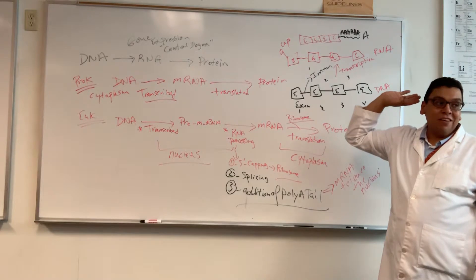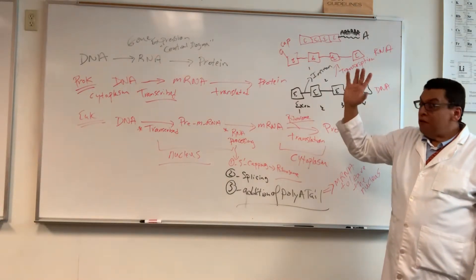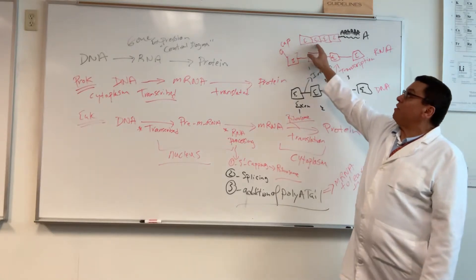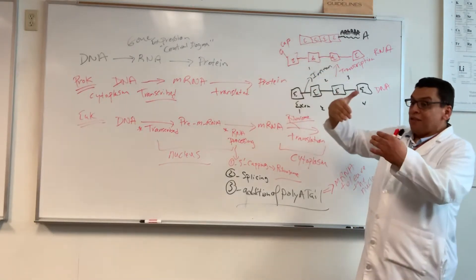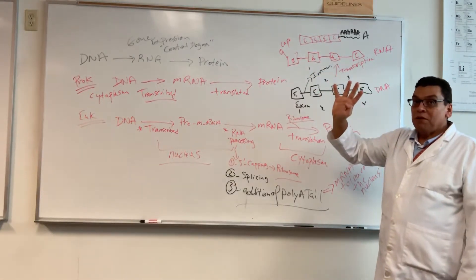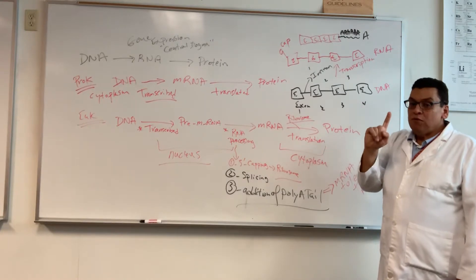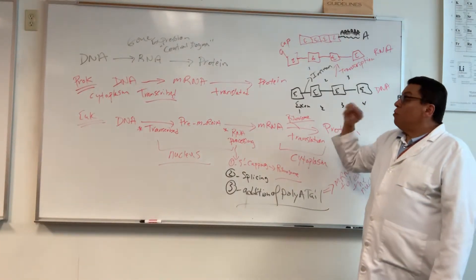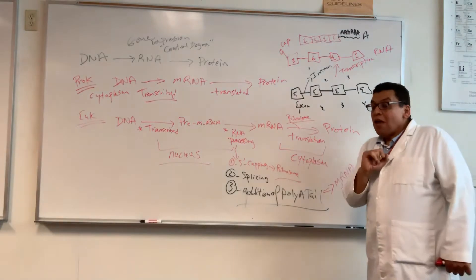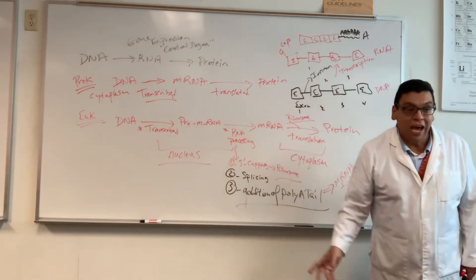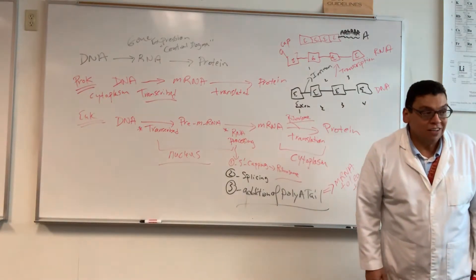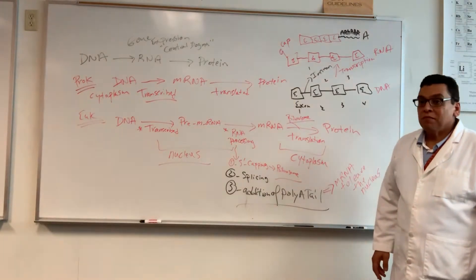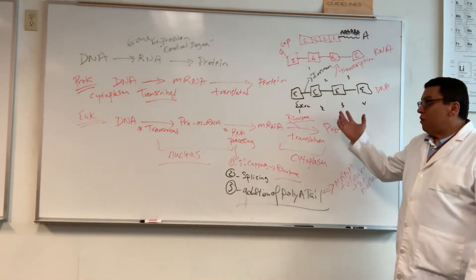To get catalase, for example, all four exons must come together — which means the introns must be removed. What happens if you don't remove one of the introns? You won't get catalase. You'll get something, but it's not catalase, and that will cause problems.